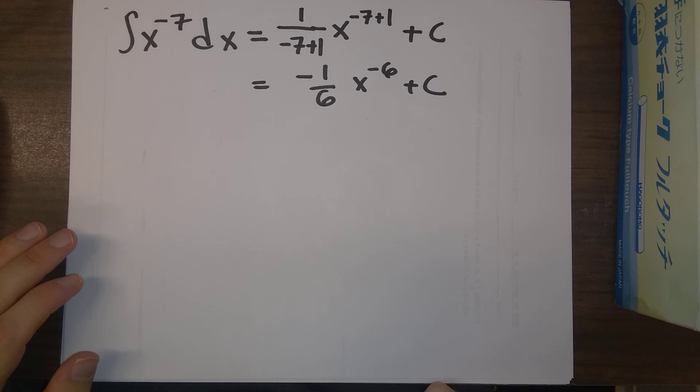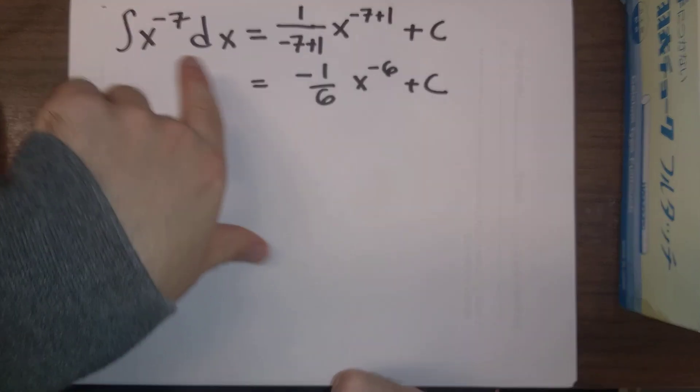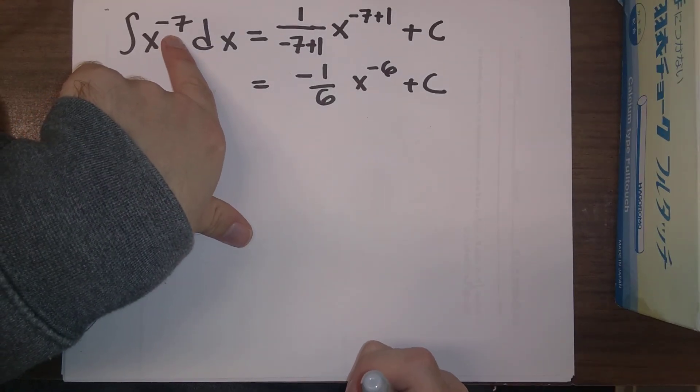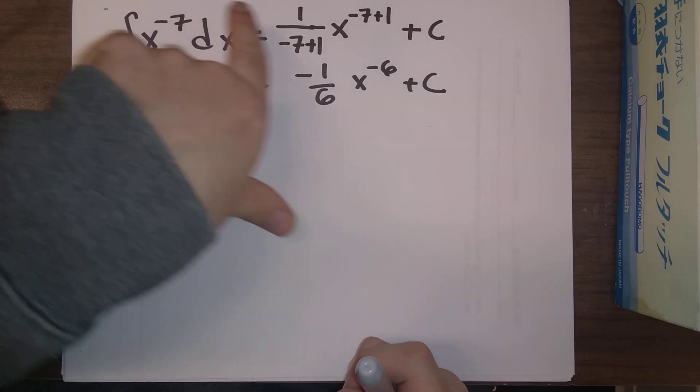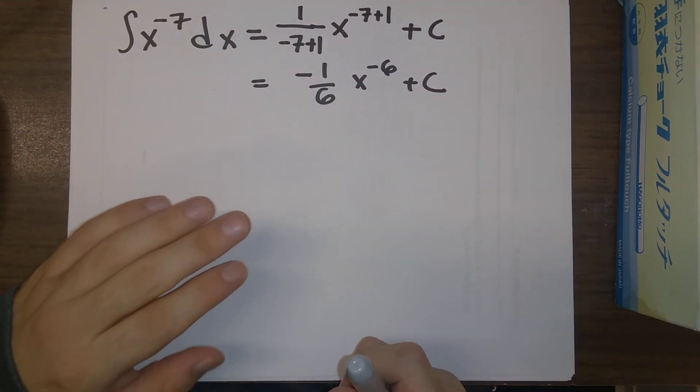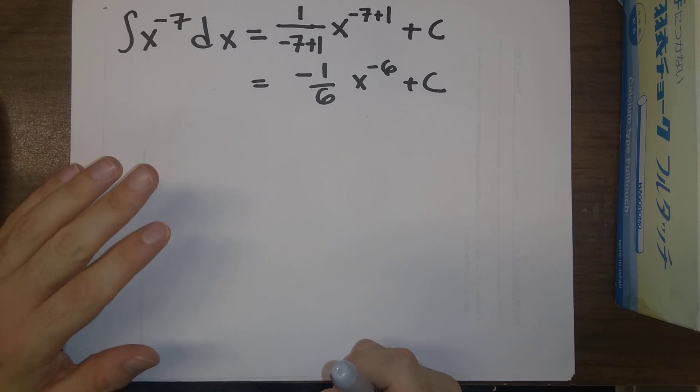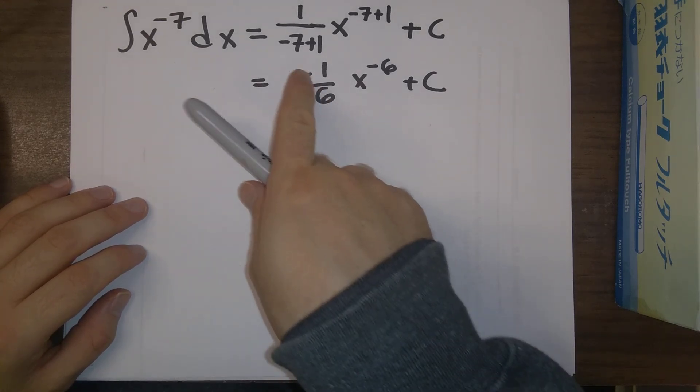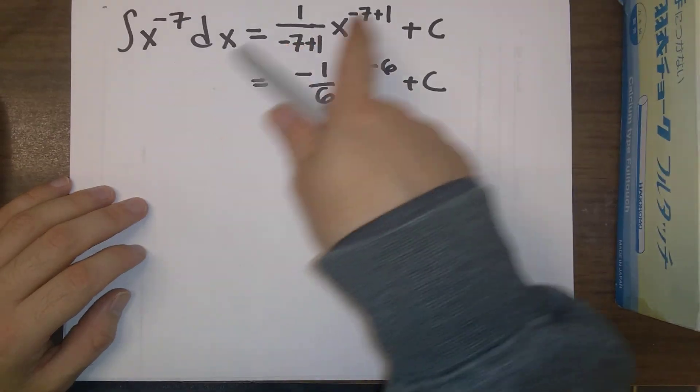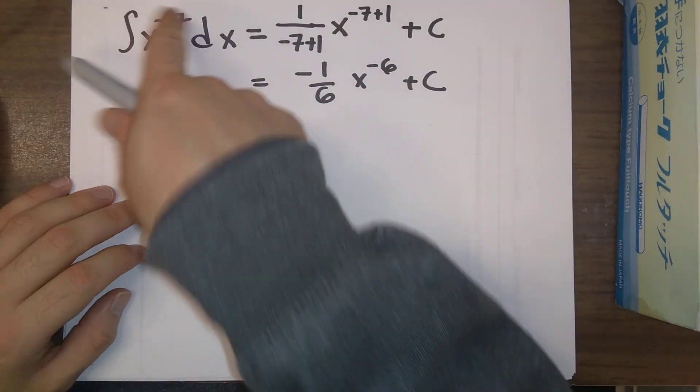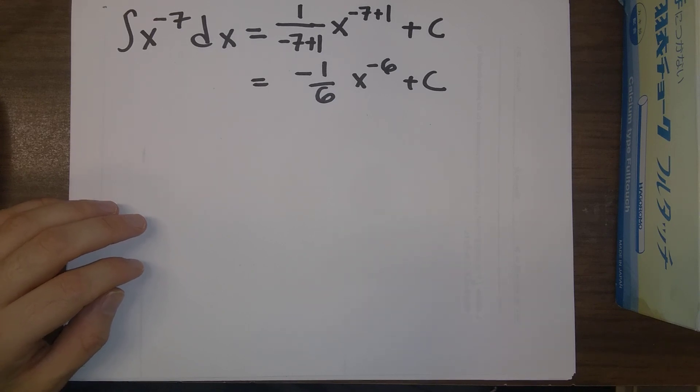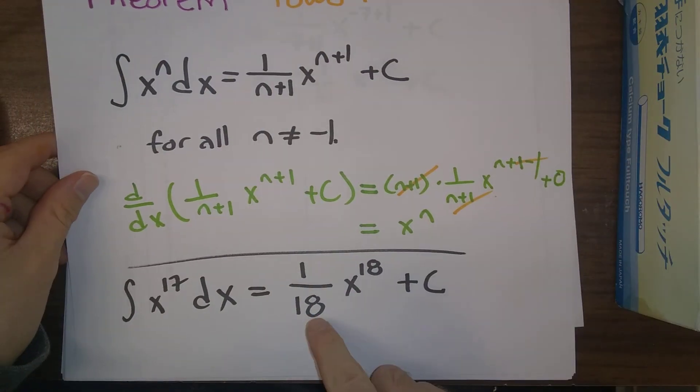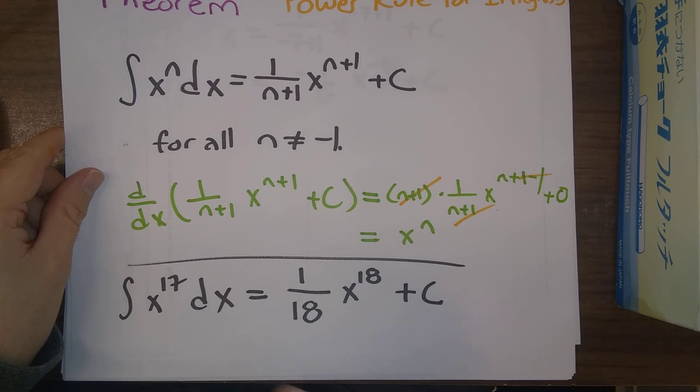Important note here that people often get wrong, that we want to increase minus 7 by 1, which means that we go from minus 7 to minus 6. So common mistake will be going from minus 7 to minus 8, because 8 is bigger than 7, but there's minus signs here. We go from minus 7 to minus 6. Also, just as a reminder, we always divide by the new exponent, not the old exponent. So we are dividing by 18 here, we're not dividing by 17.